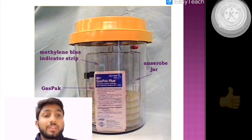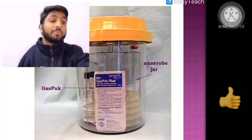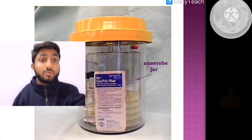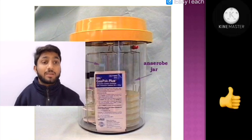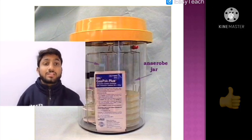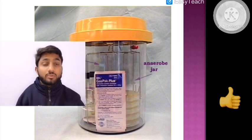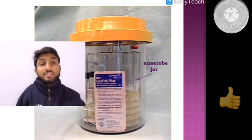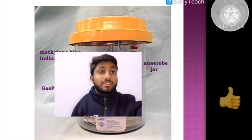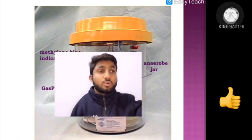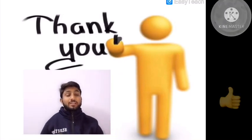An example setup includes a methylene blue strip indicator, a gas pack, and an anaerobic jar. The microorganism is inoculated into the media and placed in the container for transport. If a color change is observed within the media, it indicates that microorganisms have started to multiply, which would mean the transport conditions were not maintained properly and the transport medium was not effective.